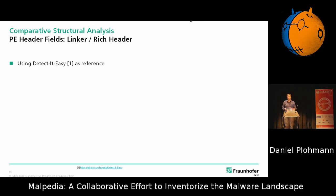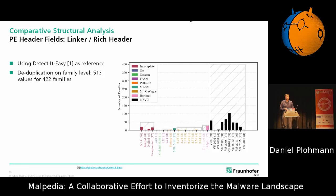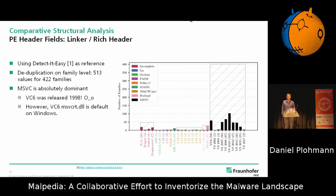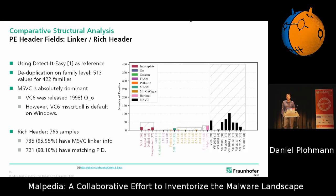We also had a look at the compilation of those families. Using DIEtect or similar methods, we can identify around about 500 data points across those families. Microsoft Visual C++ is by far the most common compiler chain used to create malware. One data point kind of sticks out there: VC6 is used almost as much as the more recent ones, which was a bit surprising — VC6 also gives you linking against the standard runtime that's always on Windows, so that basically ensures your program's not crashing if it's not finding its dependencies. We also have rich headers for around about 760 different samples, and basically in all cases it's consistent with the linker field — you'd have a matching product ID in the rich header compared to the compiler linker field.